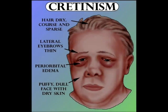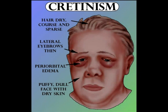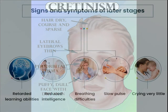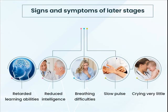As you can see, this picture depicts the symptoms of cretinism, which include dry and sparse hair, thin lateral eyebrows, periorbital edema, puffy dull face with dry skin. The signs and symptoms at later stages include retarded learning abilities, reduced intelligence, breathing difficulties, slow pulse rate, and crying very little.